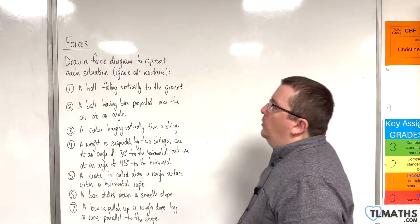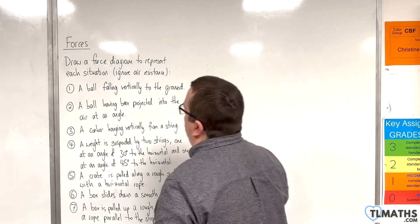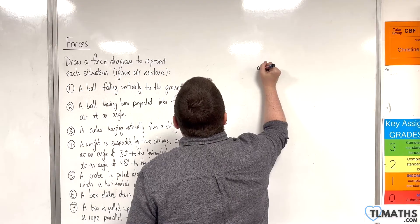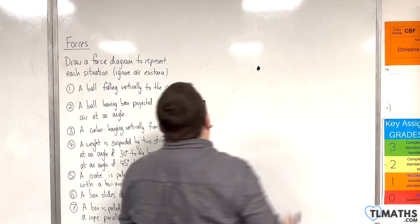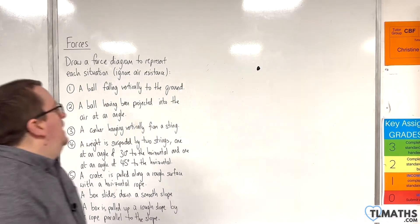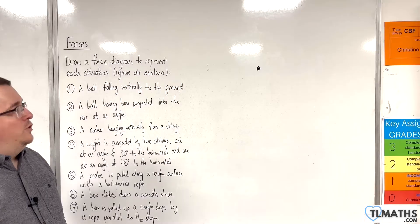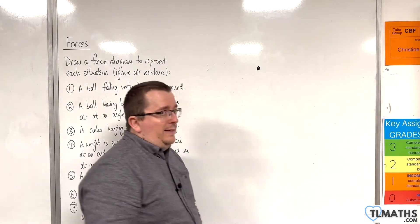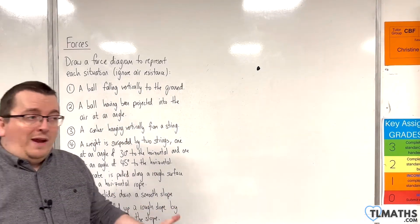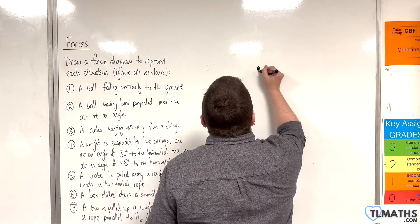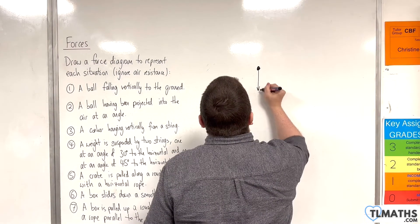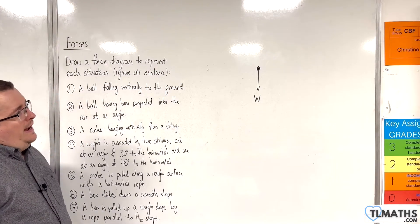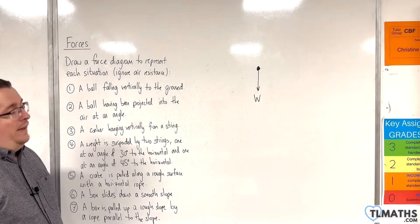Number one: a ball falling vertically to the ground. Here is my particle — the ball — and it is falling vertically to the ground. What forces will be acting on it? Well, there'll be its weight, acting vertically downwards, and that's about it.